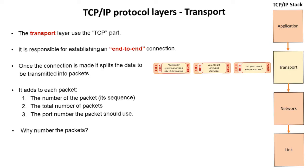Why do we need to number the packets? This comes back to packet switching which we covered in the last section. There's a good chance that these packets may arrive at the destination computer out of order. The sequencing numbers added by the transport layer allow the receiving computer to reassemble the packets in the correct sequence. They then get passed down to the network layer.